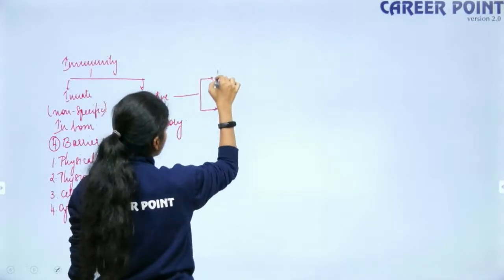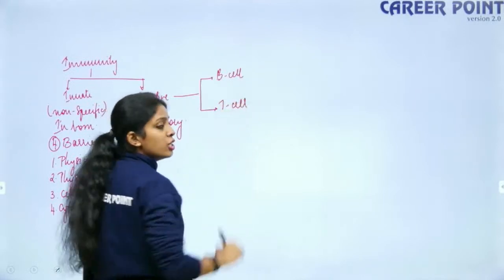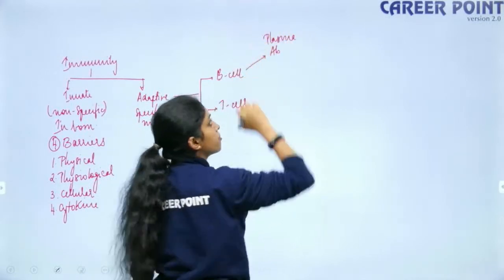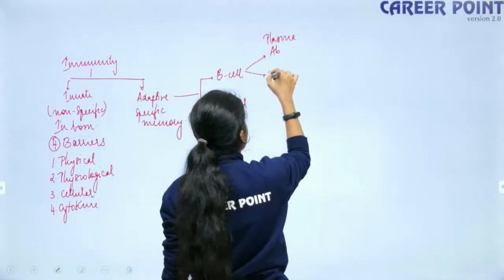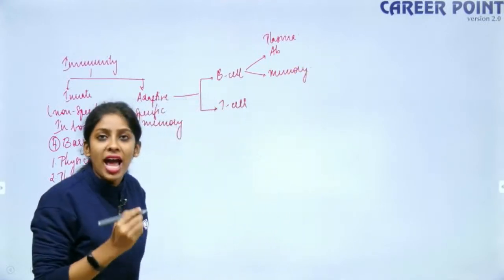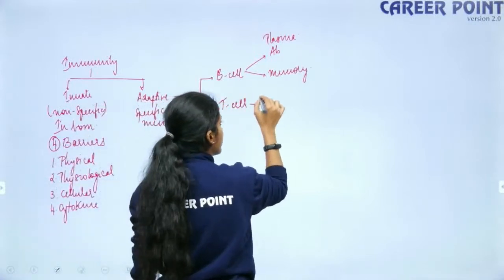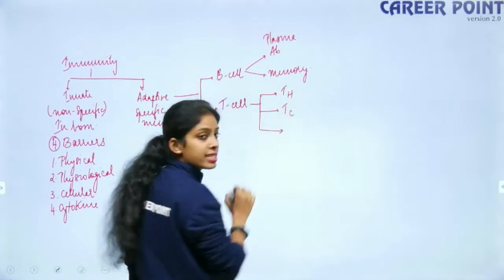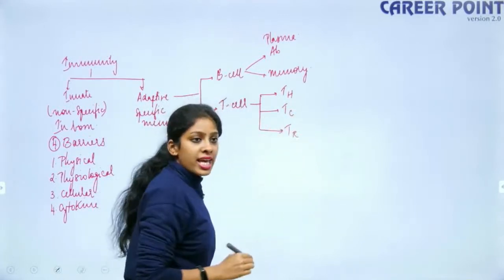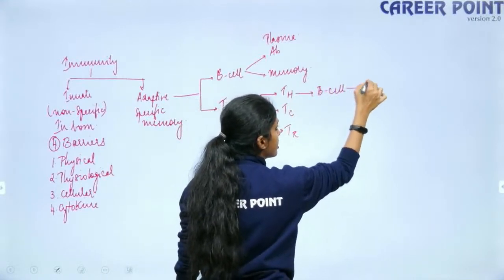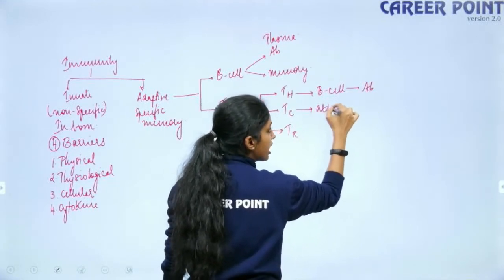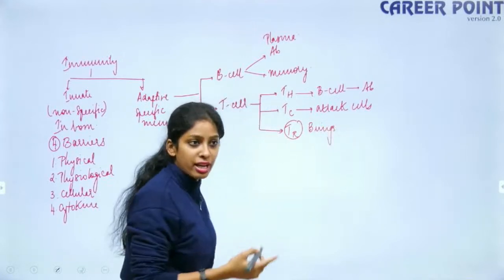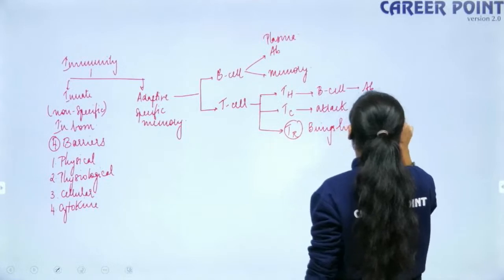Adaptive immunity is carried out by lymphocytes. B lymphocytes produce antibodies via plasma cells and also produce memory cells. T lymphocytes have three types: T helper cells (Th), cytotoxic T cells (Tc), and T regulatory cells. Th cells stimulate B lymphocytes to produce more antibodies; cytotoxic T cells attack cells phagocytically; and T regulatory cells reduce lymphocyte concentration after infection to restore homeostasis.